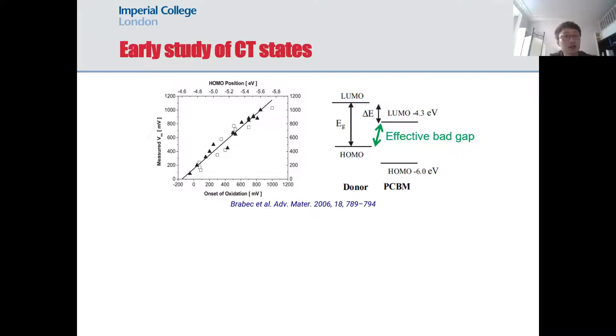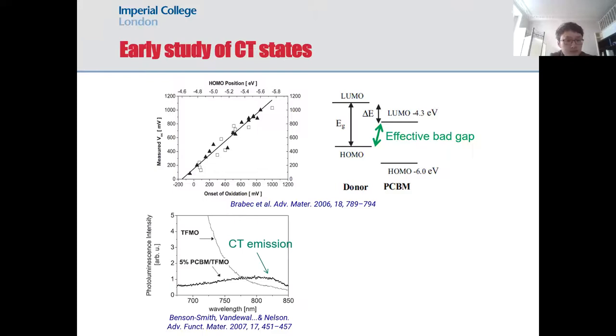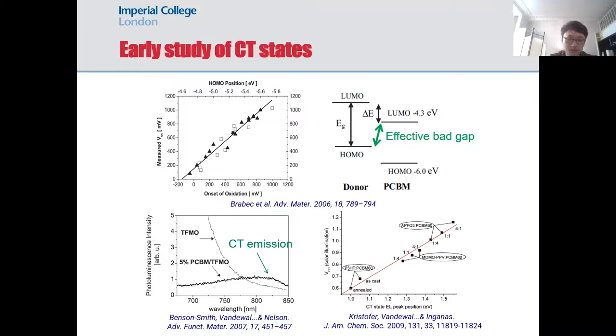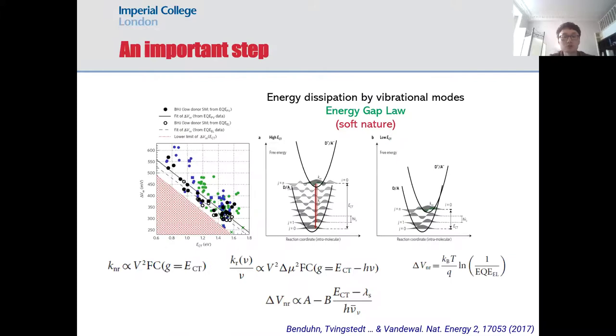In 2006, people observed a linear correlation between open circuit voltage and the optical band gap. Later, independent studies observed direct emission from CT state. People observed that open circuit voltage actually scales linearly with the energy of CT state. All those studies brought up huge interest in understanding the fundamental links between open circuit voltage and CT state properties.